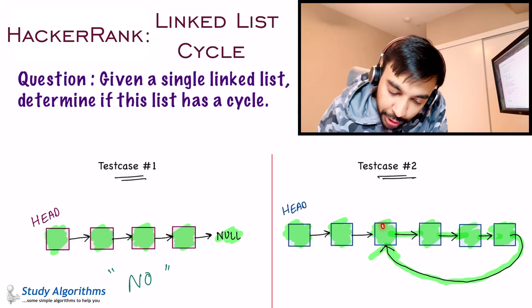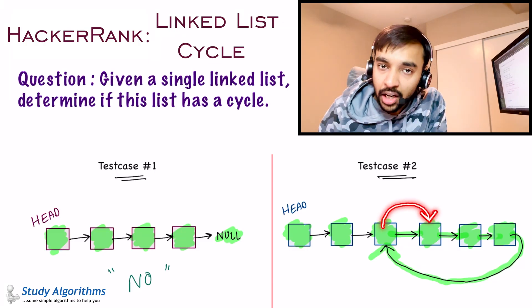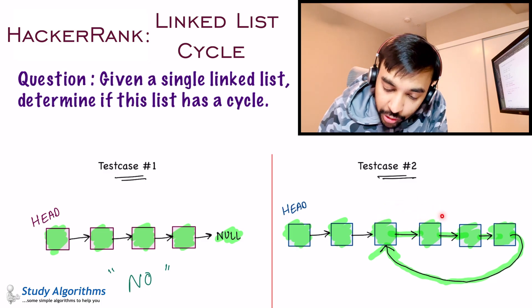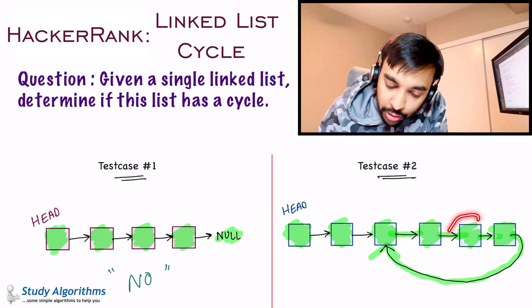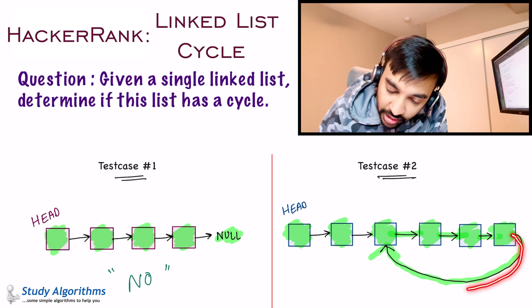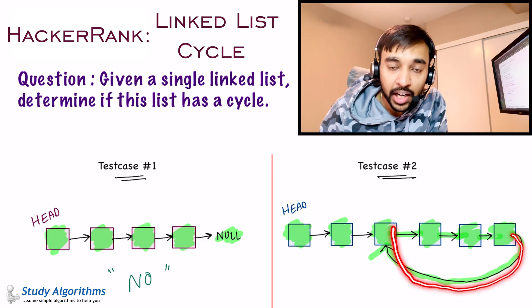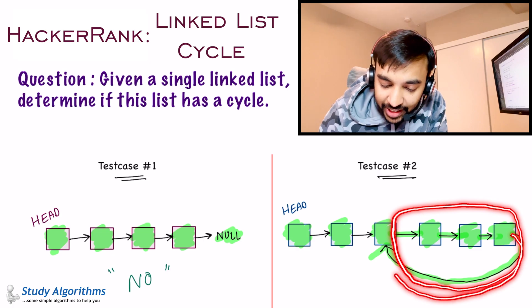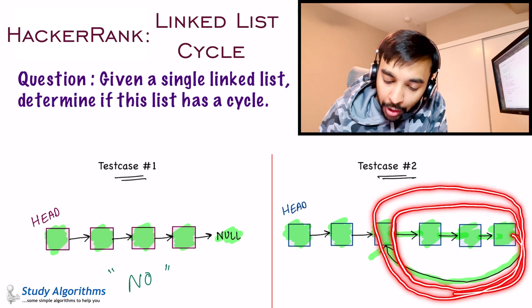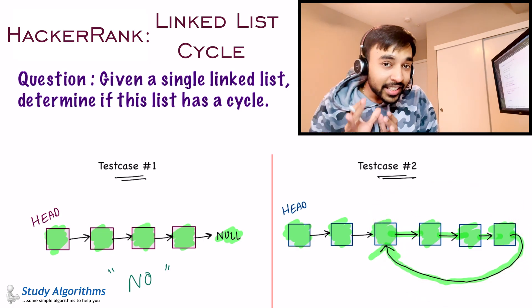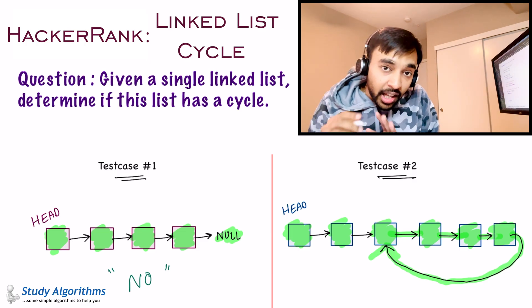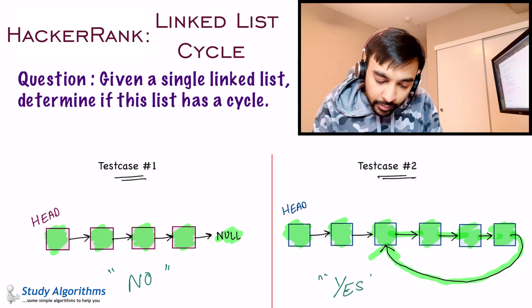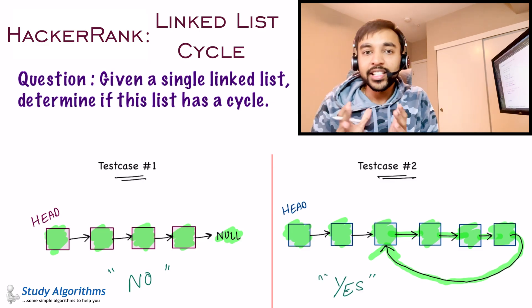Once you do a next, you will reach one of the internal pointers, and you have landed at a node originally traversed. When you do a next again, you reach the next node, and eventually you will reach back the original node. So you are stuck in a cycle — this loop will go on and on, and hence this list has a cycle. What you need to tell in this problem is simply: if you have a cycle, answer yes; if you don't, answer no.